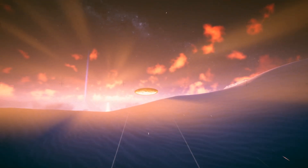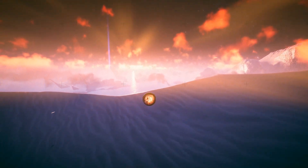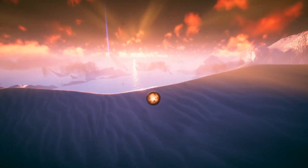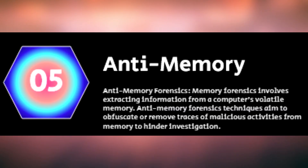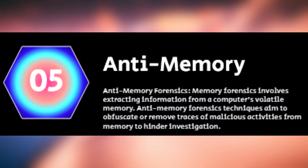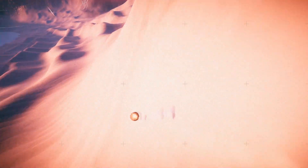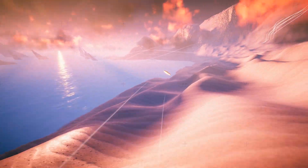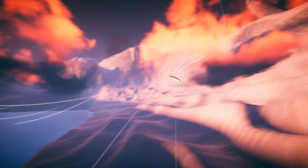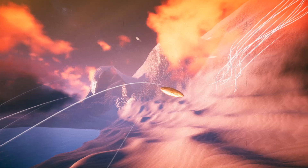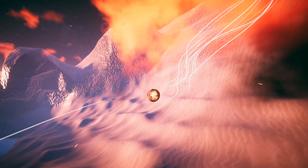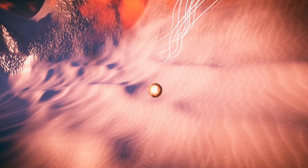File fragmentation is a great way to mix up the files that you have and make it harder for a forensic investigator to read or recover them. Anti-forensic number five, or anti-memory forensics, involves extracting information from a computer's volatile memory, aka the RAM. RAM is always volatile memory, meaning it's constantly changing. Anti-memory forensics obfuscates or removes traces of activities from RAM to hinder investigations, so clearing your RAM could actually make you a little bit more anonymous online.